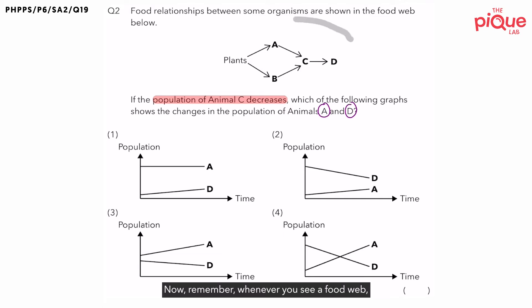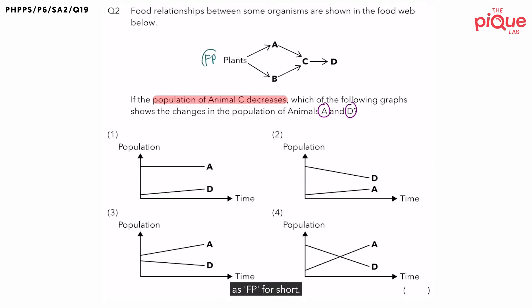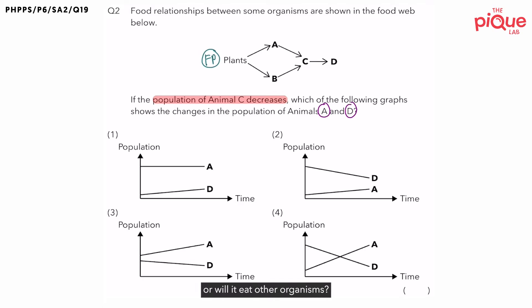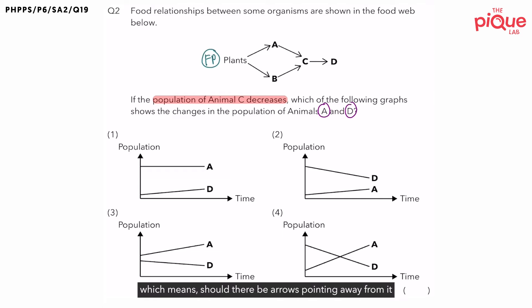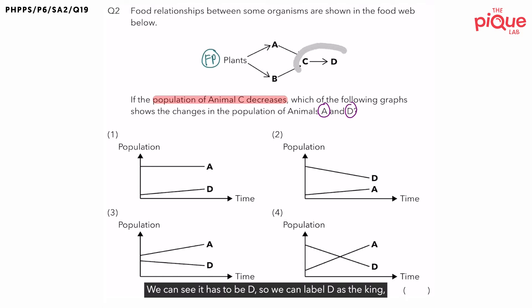Whenever you see a food web, the first thing we should always do is label the food producer and the king. The food producer can make its own food, so which organism here is the food producer? It has to be the plant, so I'm going to label it as FP for short. And which organism here is the king? The king would always be eating other organisms, meaning there should only be arrows pointing towards it. We can see it has to be D, so I'm going to label D as the king — I'm going to draw a crown to represent the king.